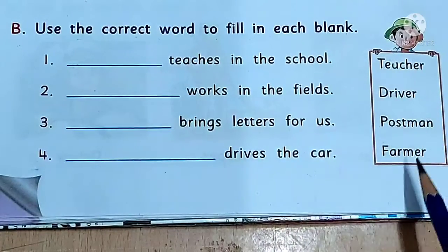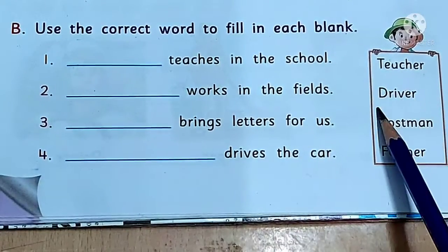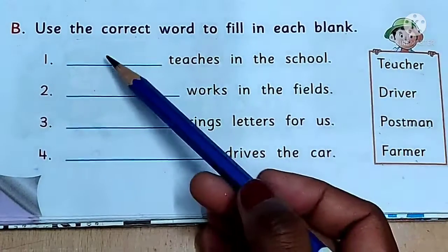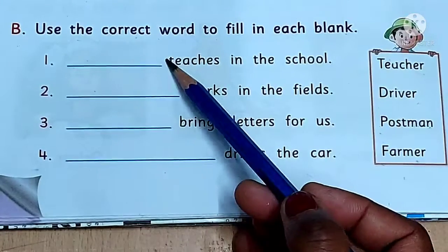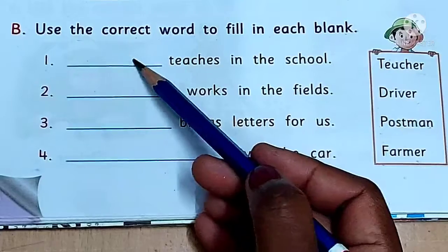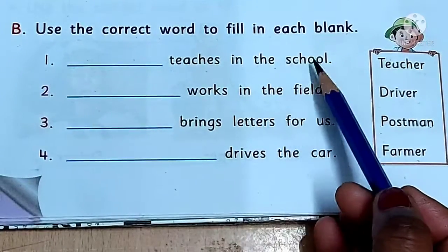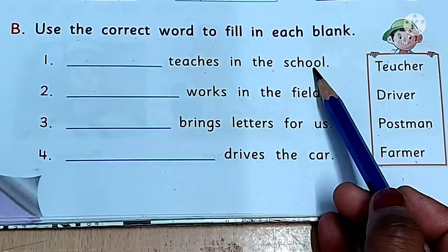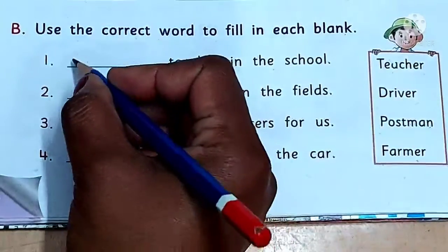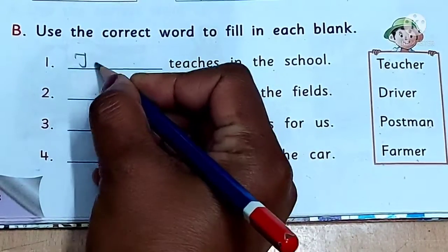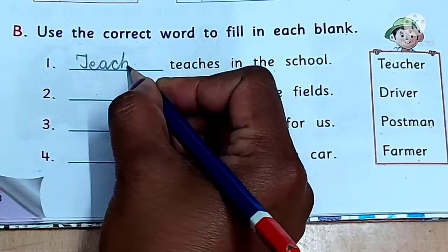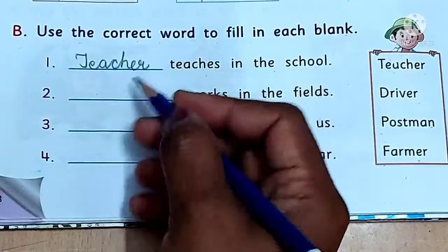You can see the words here: teacher, driver, postman, farmer. You have to put the correct word to fill the blanks. Number one: blank teaches in the school. Who teaches in the school? Teacher. You have to write the spelling of teacher — T-E-A-C-H-E-R, teacher.